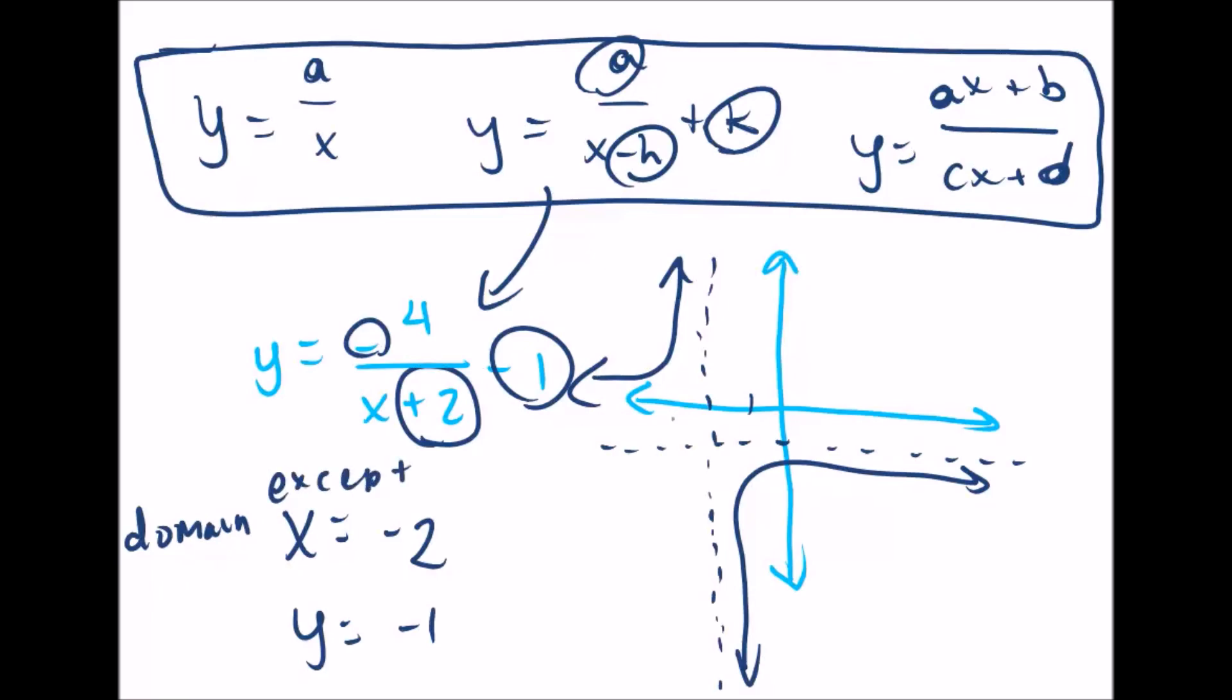All the x values except x equals negative two. It can be anything to the left, anything to the right, but it cannot be x equals negative two, because there's an asymptote there, there's a line there that says you shall not pass.